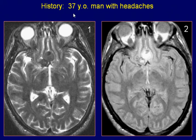A 37-year-old man with headaches. Axial T2 and proton density varied images of the brain are presented.